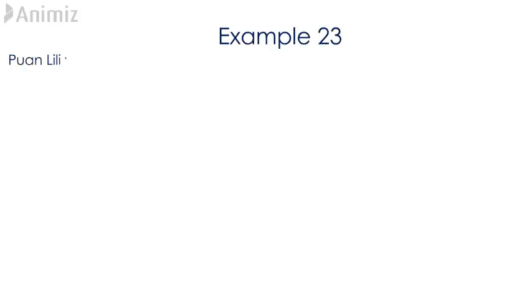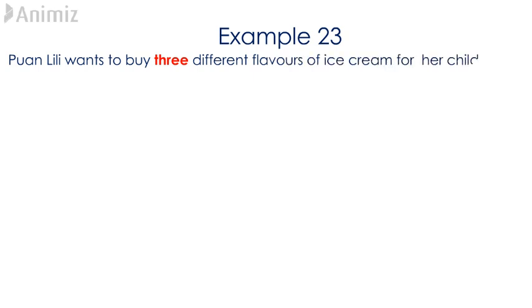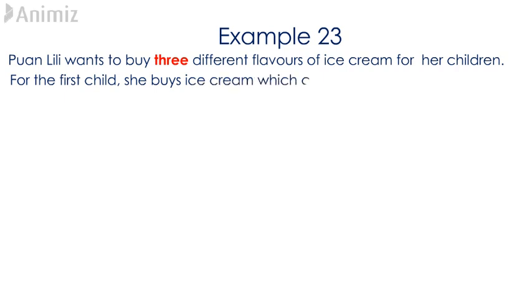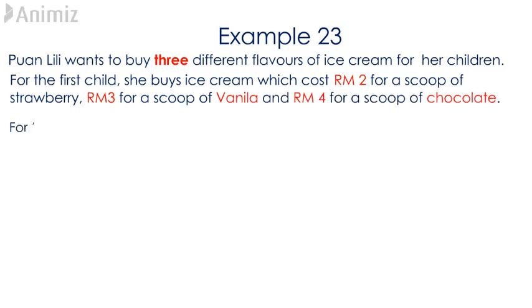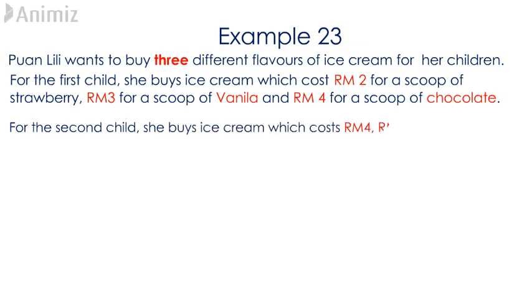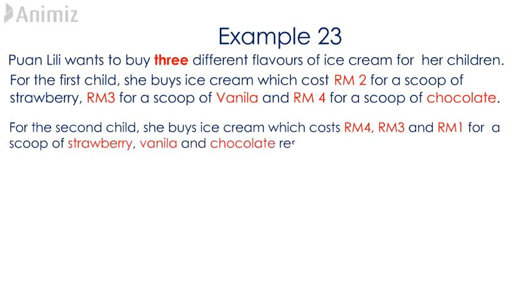Example 23. Lily wants to buy three different flavours of ice cream for her children. For the first child, she buys ice cream which costs RM2 for a scoop of strawberry, RM3 for a scoop of vanilla and RM4 for a scoop of chocolate. For the second child, she buys ice cream which costs RM4, RM3 and RM1 for a scoop of strawberry, vanilla and chocolate respectively.